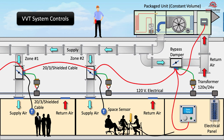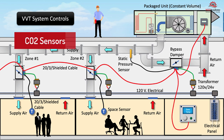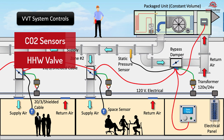Lastly, a static pressure sensor will be installed. Optional control items include a CO2 sensor for carbon dioxide sensing and ventilation control, and heating hot water valve actuators for zones with heating hot water. The system can also be monitored by a building management system.